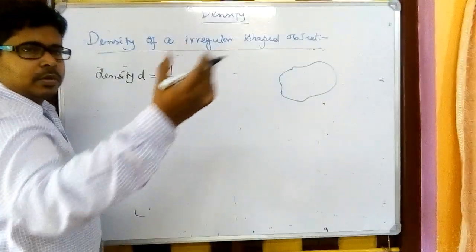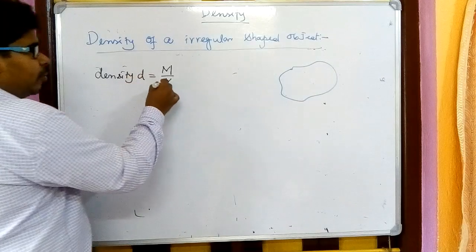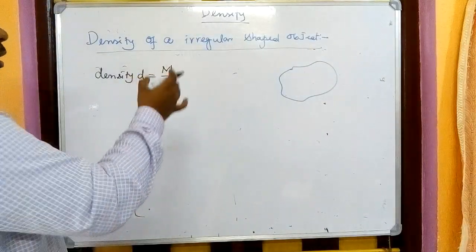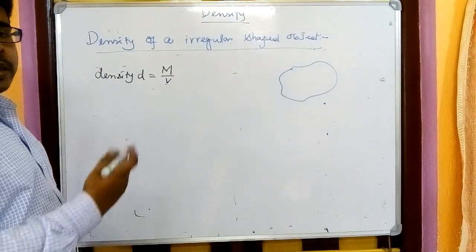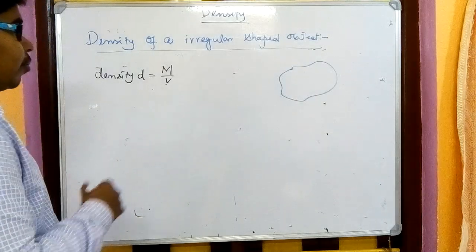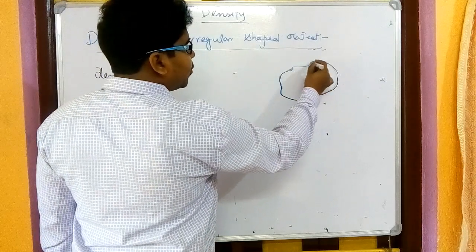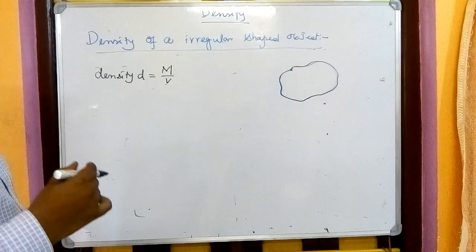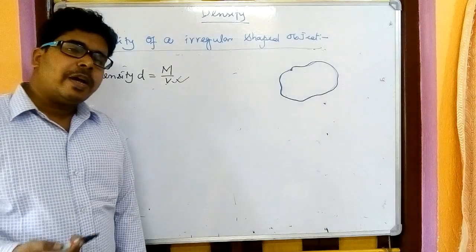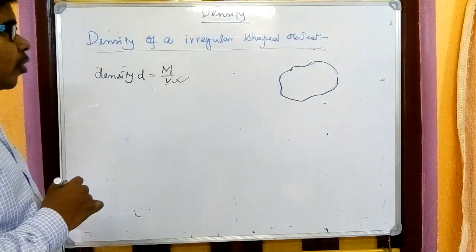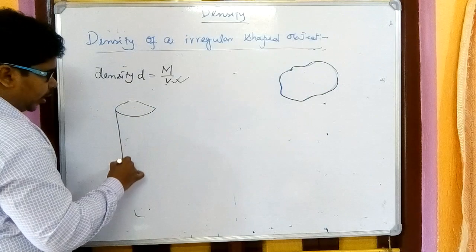For density, d = m/v. Mass we can find using a beam balance or electrical balance — we learned that in class 6. The problem is volume. For a regular shape there are equations — for sphere, cylinder, cuboid — but for an irregular shape there is no perfect formula, so how do we find the volume? If we cannot find the volume, we cannot find the density.